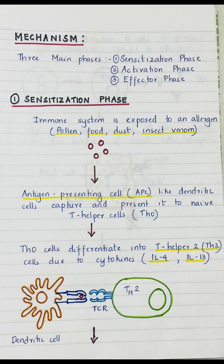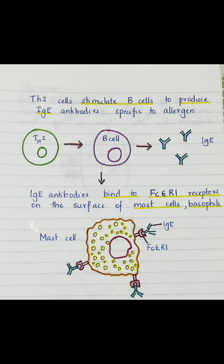During the sensitization phase, our immune system is exposed to an allergen such as pollen, food, dust, or insect venom. When the allergen enters the body, antigen presenting cells like dendritic cells capture the antigen and present it to naive T helper cells. These naive T helper cells differentiate into T helper 2 cells due to cytokines like interleukin-4 and interleukin-13. T helper 2 cells then stimulate B cells to produce IgE antibodies specific to the allergen. These IgE antibodies bind to FC-Epsilon-R1 receptors on the surface of mast cells and basophils, making them sensitized. This process occurs without visible allergic symptoms.